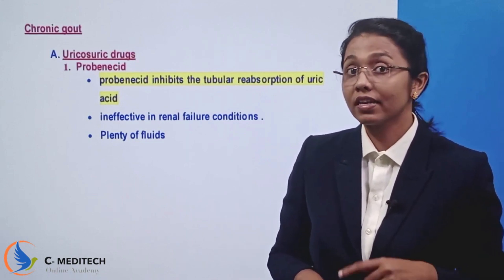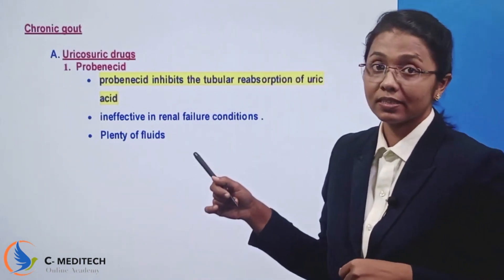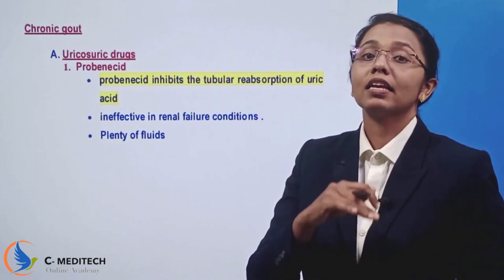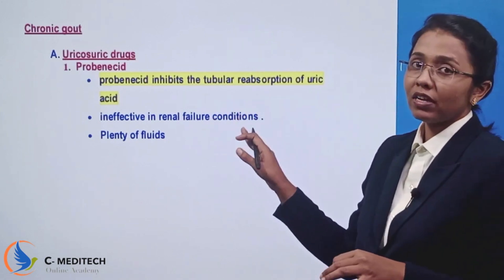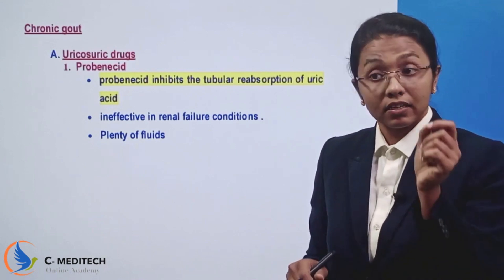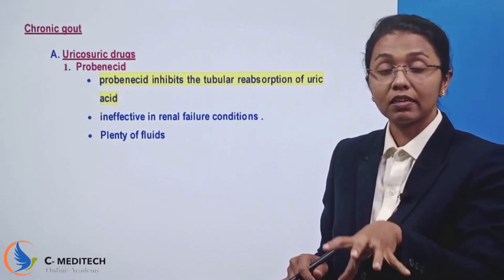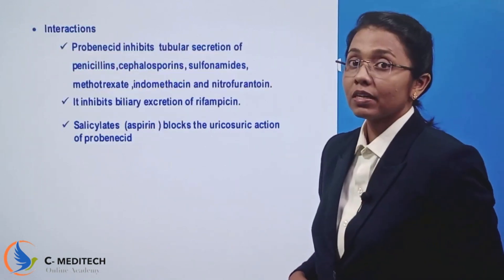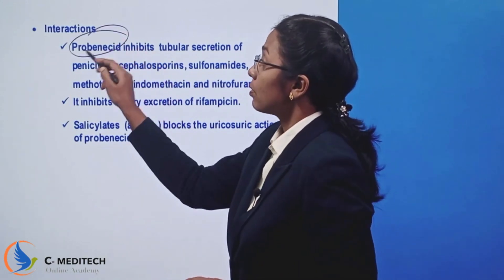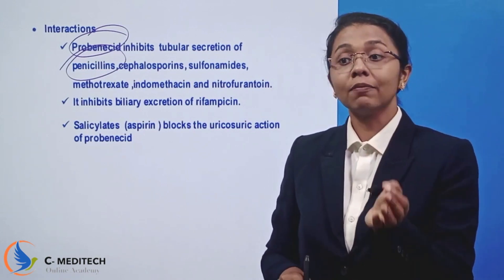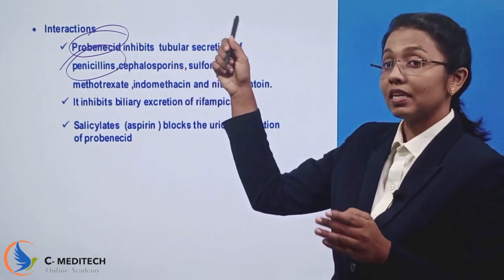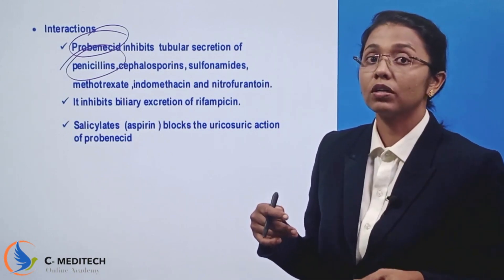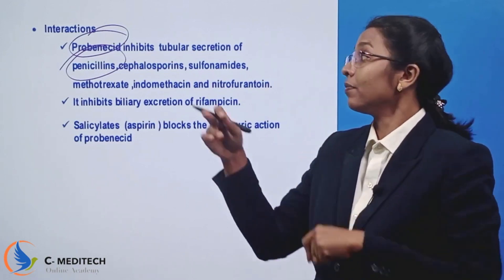For chronic gout, uricosuric agents like probenecid promote uric acid excretion. Probenecid works by inhibiting tubular reabsorption of uric acid in the kidney, increasing its excretion. Therefore, plenty of fluids must be taken by the patient to prevent uric acid deposition. An important drug interaction for the exam: probenecid and penicillins — probenecid inhibits the tubular secretion of penicillins, prolonging their action.